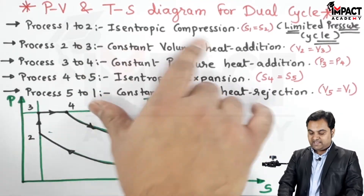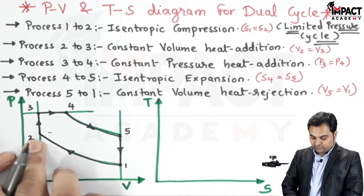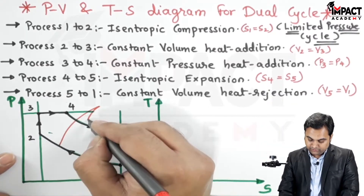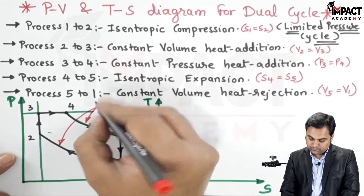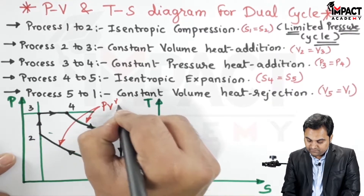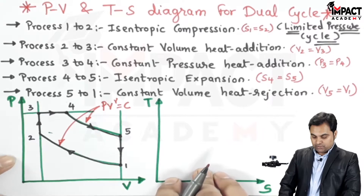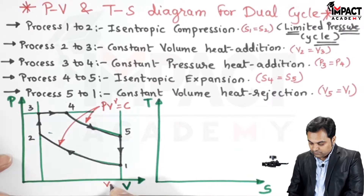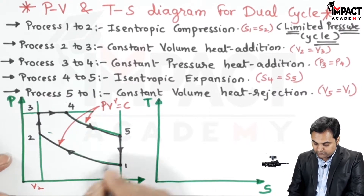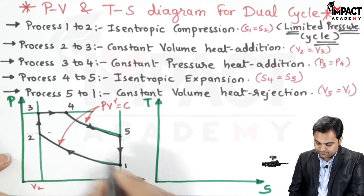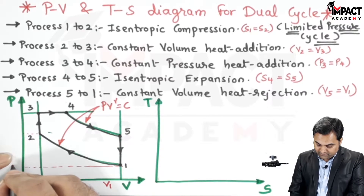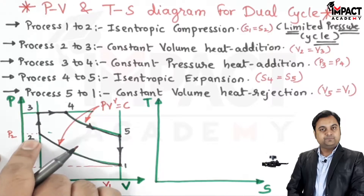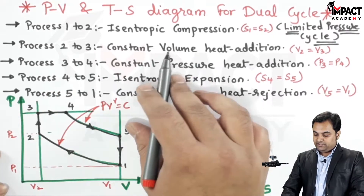The first process, one to two, is isentropic compression, so this curve one to two, and another curve four to five — they both indicate the isentropic processes, denoted by the law PV raised to gamma is equal to constant. During the isentropic compression process, initially the volume is V1, and after compression the volume becomes V2 and the pressure increases from P1 to P2. This is the isentropic compression process.